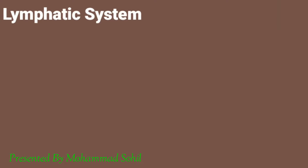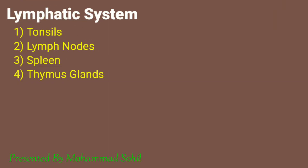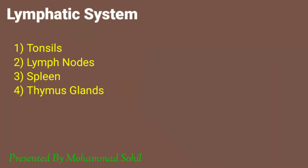Hello friends, my name is Muhammad Sohil and today I am going to teach you a very important topic: the lymphatic system. There are four basic types of lymphatic organs — tonsils, lymph nodes, spleen, and thymus gland. Let's discuss them one by one.